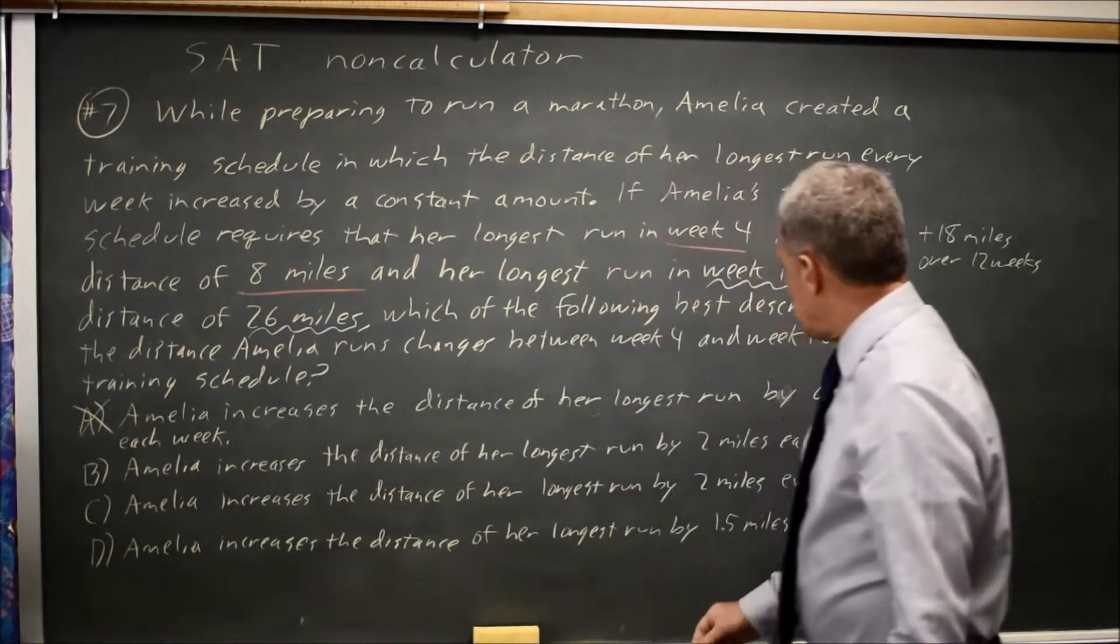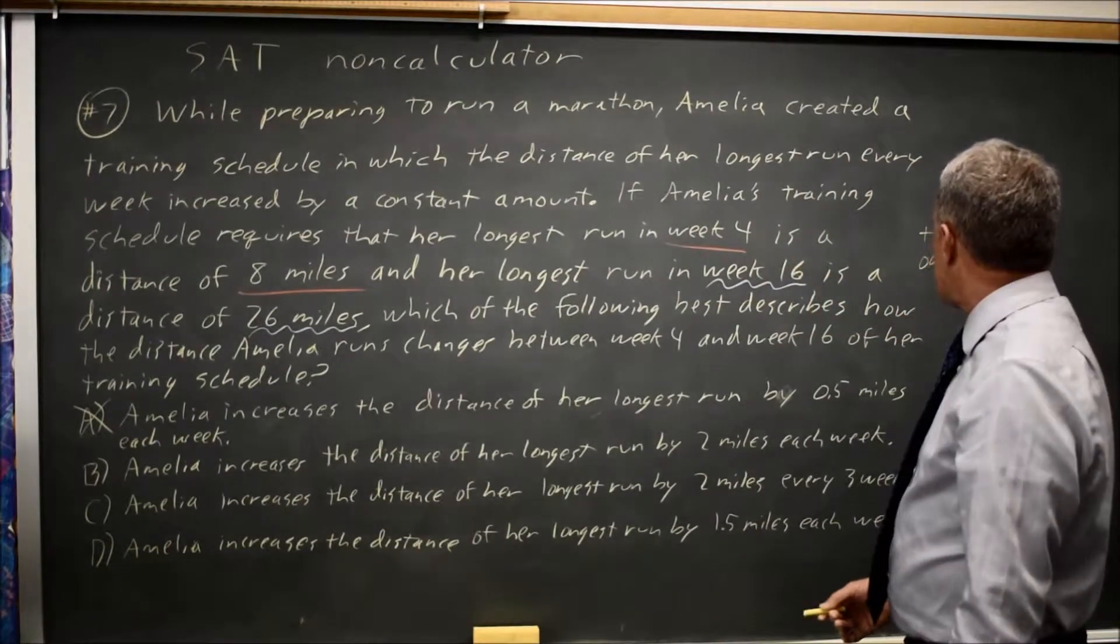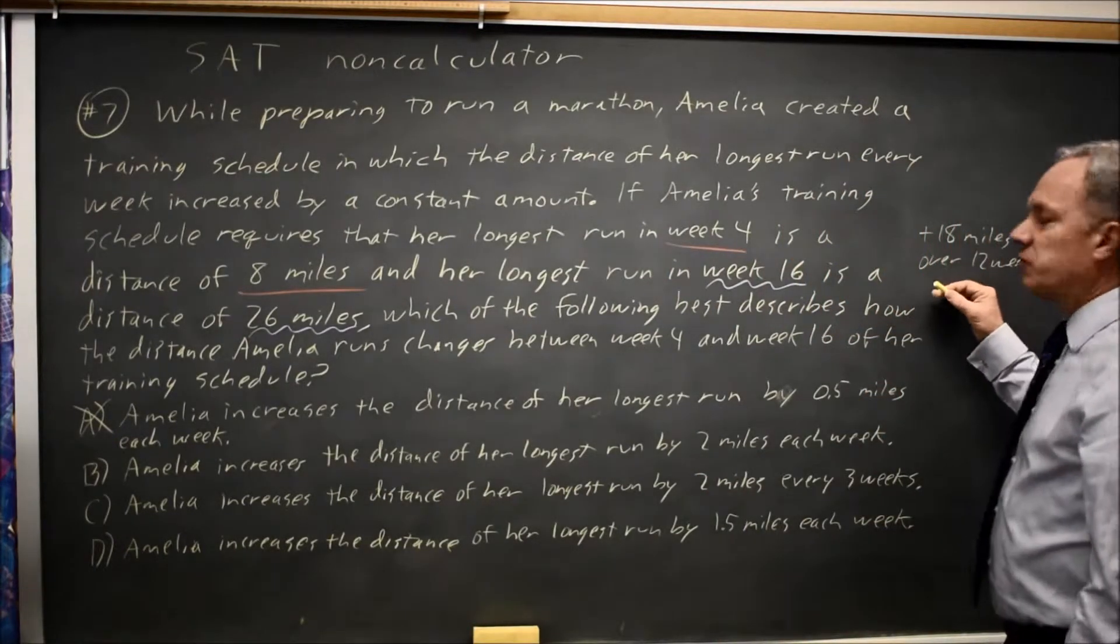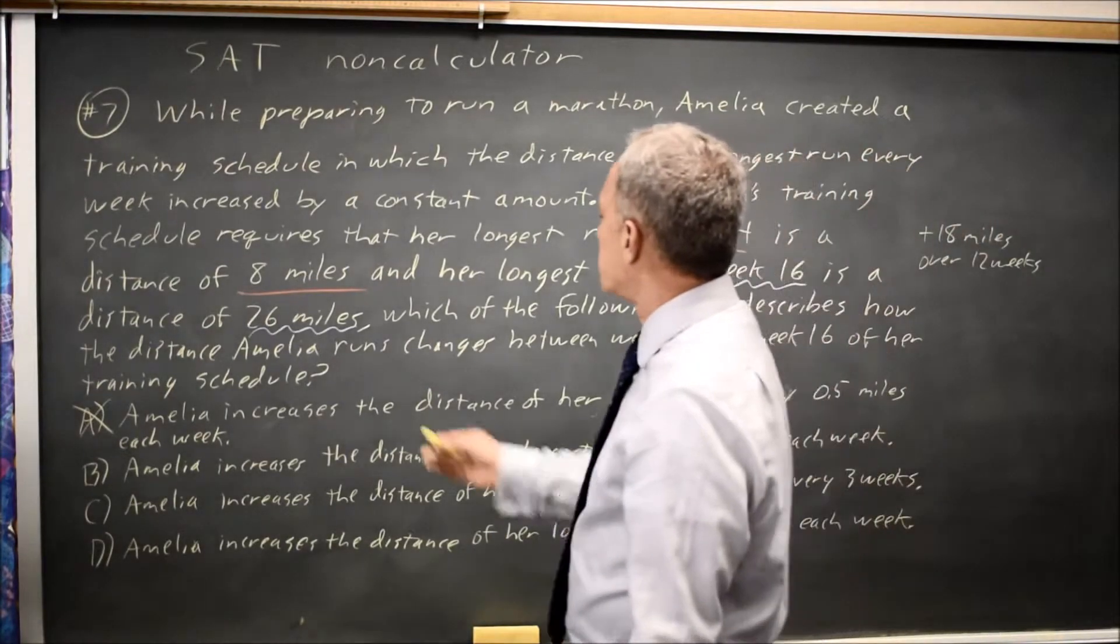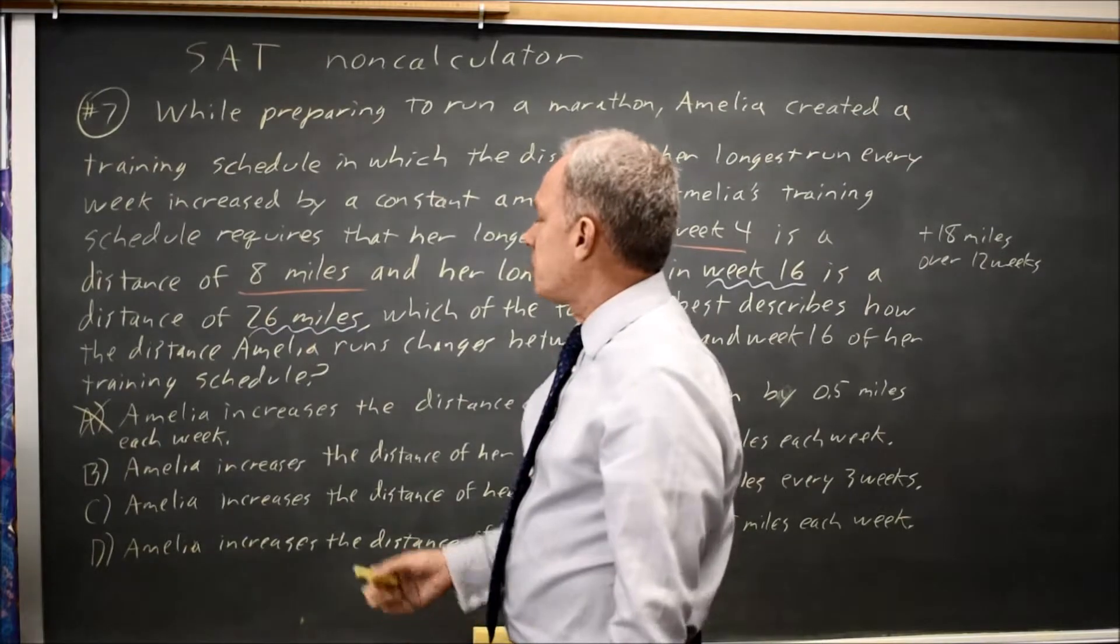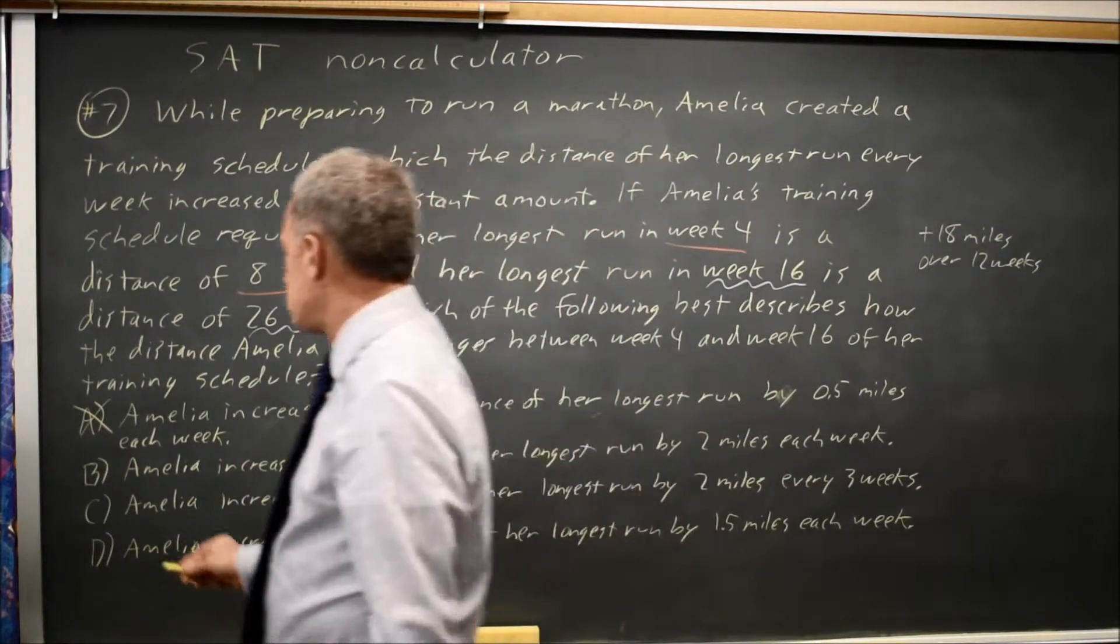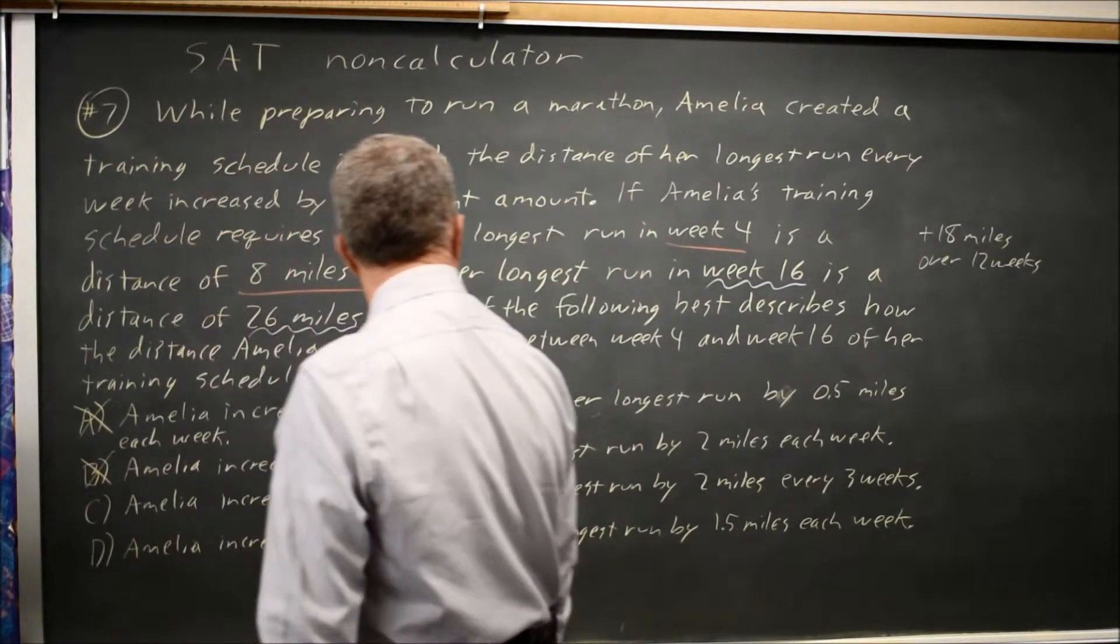Choice B, she adds two miles per week. If you add two miles per week over twelve weeks, you're adding twenty-four miles, and since Amelia started out running eight miles, she should end at thirty-two, but she only ends at twenty-six, so that's not correct.